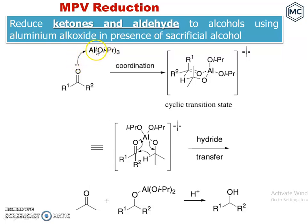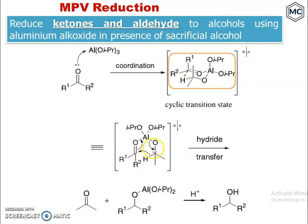The ketone forms a coordinate bond with aluminum, which has three isopropoxide ligands. This forms a cyclic transition state. The cyclic transition state undergoes a rearrangement — one of the isopropoxides forms a carbonyl bond, and a hydride transfer takes place. The H⁻ attacks the carbonyl position, the double bond breaks.